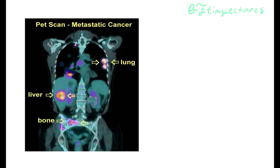Here, we have a PET image, which is essentially a scanning procedure where they insert radioactive glucose in your body. The cancer cells use up a lot of energy, and to use up energy they use glucose. The more cells you have in one area, the more energy or glucose they need to survive. In this section, we have a spot representing cancer within the liver, and we also have cancer in the lungs, and cancer possibly in the bone.